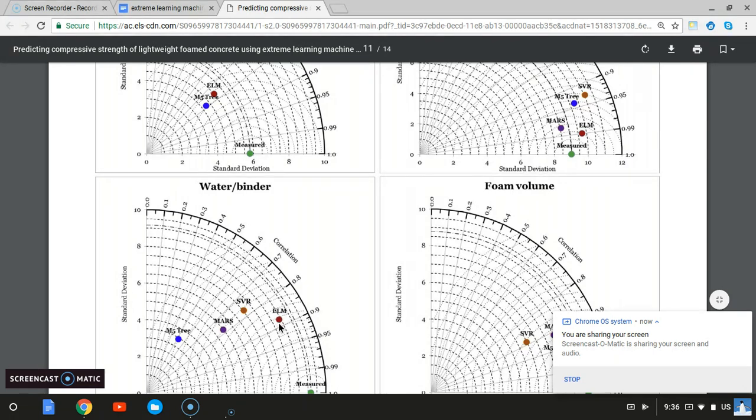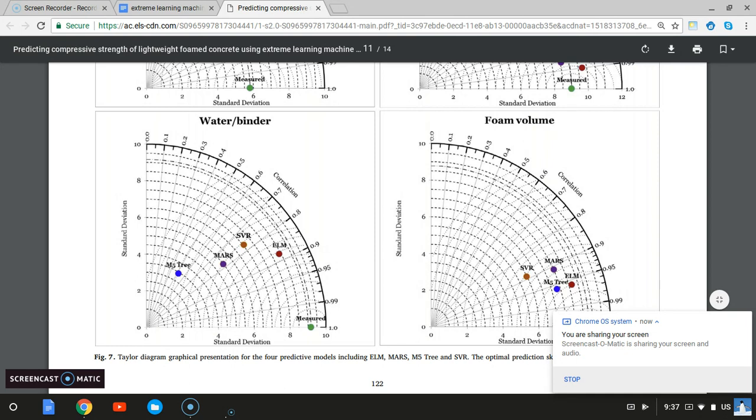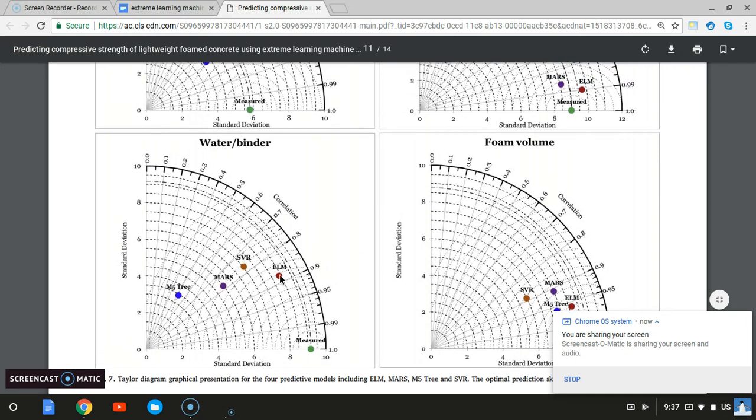For example, for water binders input, ELM is also the highest correlation, basically the best predictor. You can see that ELM, which is extreme learning machine based on neural network, single-layer neural network, is the best model here for predicting concrete strength.